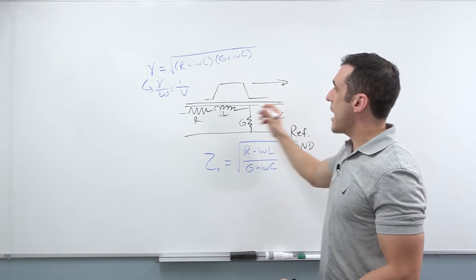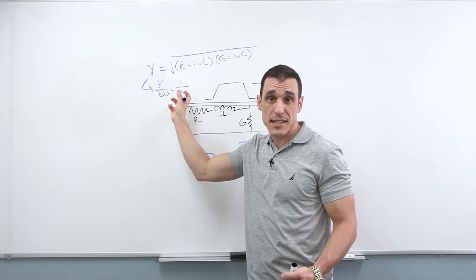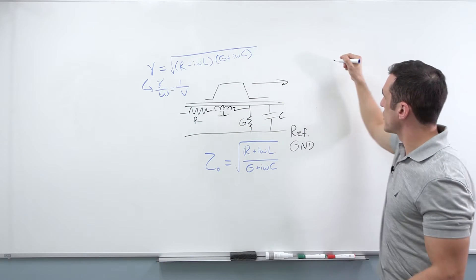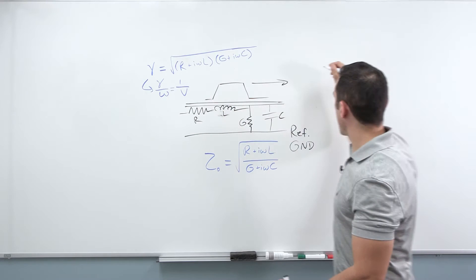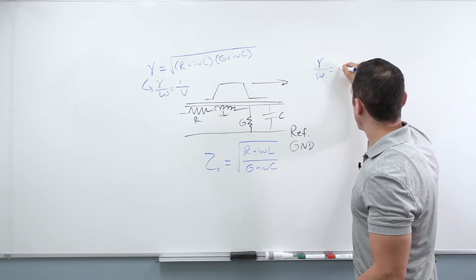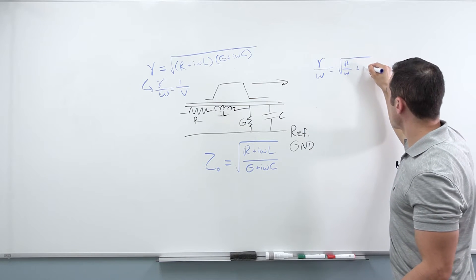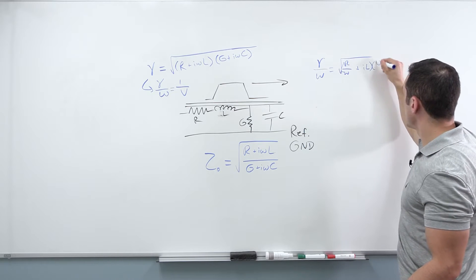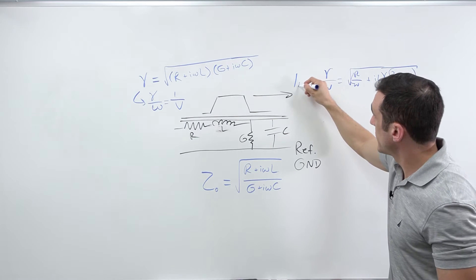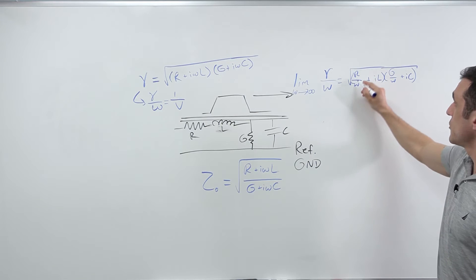So what happens if I factor out the Omega from here, and then I determine what the velocity is of this trace traveling along the signal that's traveling along this trace. So I'm going to factor this out and I get Omega or gamma over Omega equals a square root R over Omega plus I times L and then G over Omega plus I times C. If I just take limit as Omega gets very large, what's going to happen?